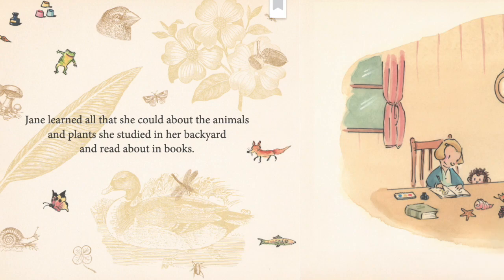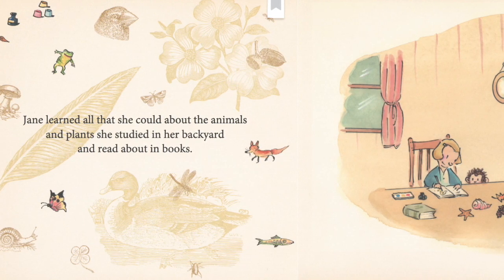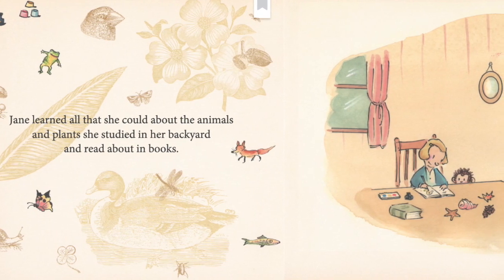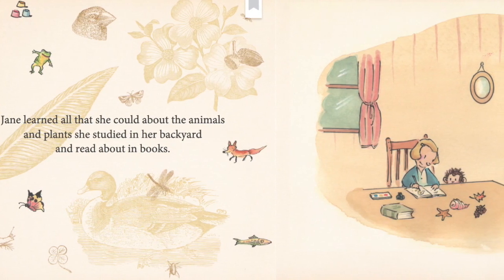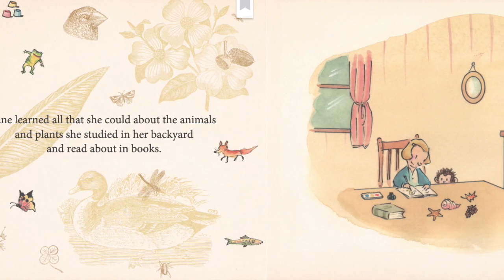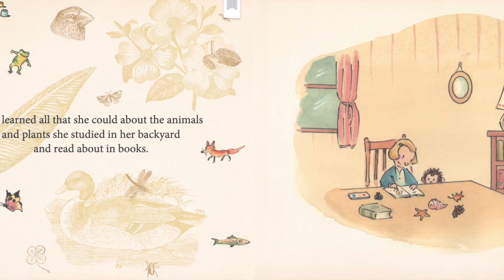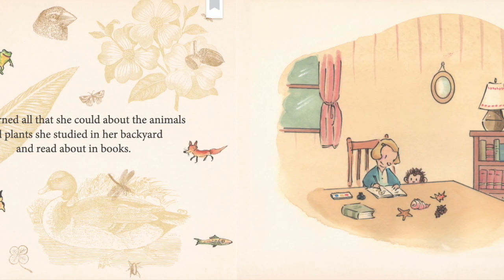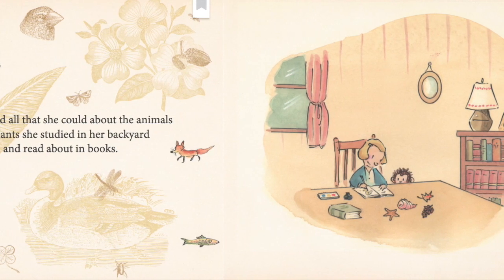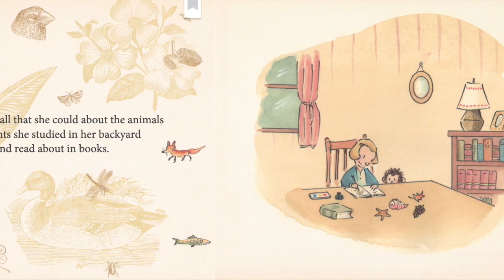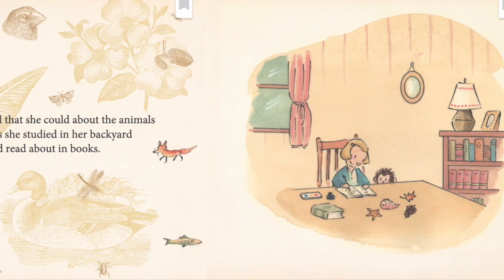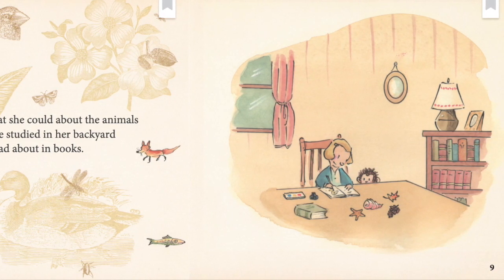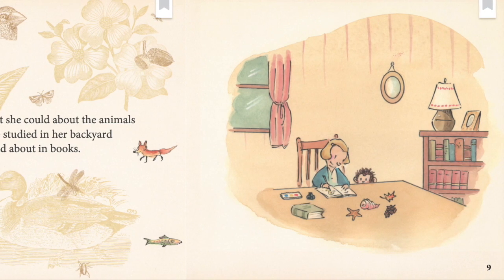Now let's take a look at this page. The words say Jane learned all she could about the animals and plants she studied in her backyard and read about in books. What in the picture matches the text? I see Jane drawing pictures in a book. There are also lots of drawings of plants and animals. What animals and plants does it look like she's studying? I see fish, bugs, foxes, ducks, clovers, mushrooms, and even flowers.